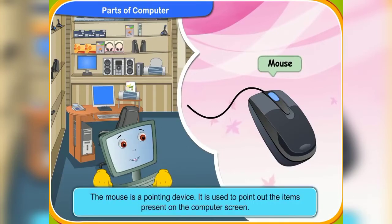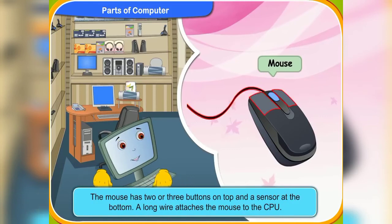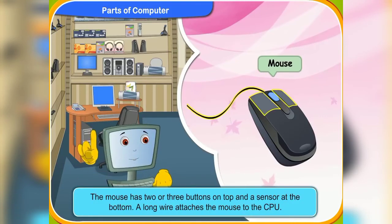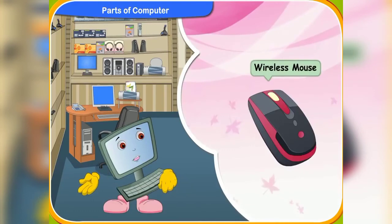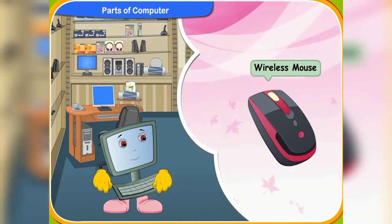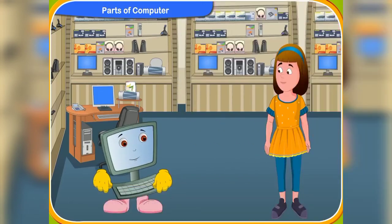Let us now discuss about the mouse. You probably know that the mouse is a pointing device. Yes, Clicko. I know that the mouse is used to point out the items present on the computer screen. Right, Rennie. The mouse has two or three buttons on top and a sensor at the bottom. A long wire attaches the mouse to the CPU. Nowadays, wireless mouse is also available. Why is there a light under the mouse, Clicko? That is the optical sensor, Rennie. It detects the mouse movement. Earlier, there used to be a ball inside the mouse instead of an optical sensor.